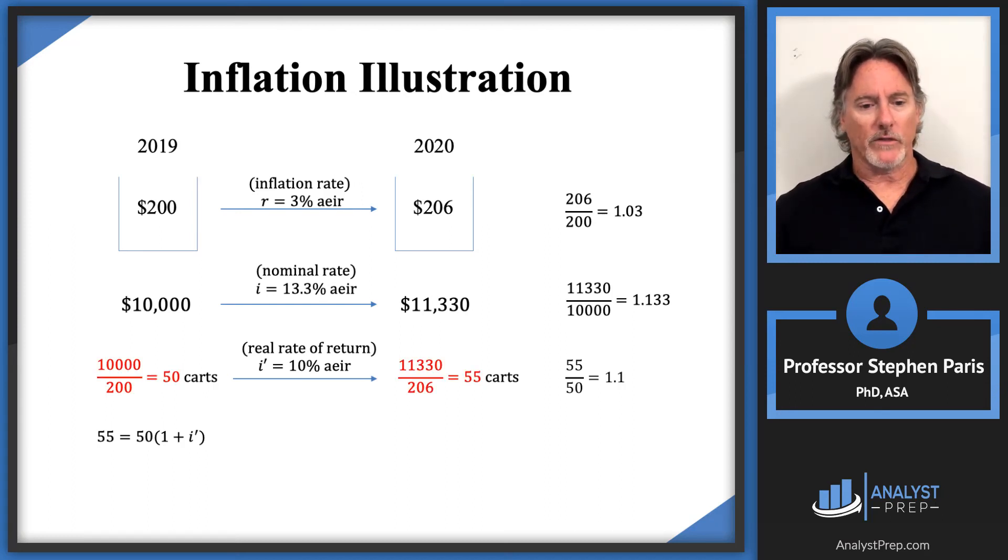I have it highlighted in red where the 55 and 50 came from. Let's substitute those values in. Now let's look at where the 11,330 and 206 come from. I've highlighted in red where those come from.